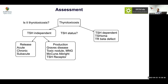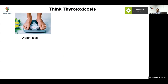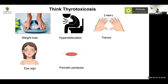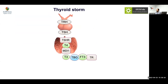The key questions are: is it thyrotoxicosis, what is the TSH status, and what is the cause? To identify thyrotoxicosis, you should be aware of when to consider it. Most of us know that if there is weight loss, hyperdification, tachycardia, tremor, or sympathetic activity, we start thinking of thyrotoxicosis. You should also be aware that periodic paralysis, polyuria, easy fatigability, worsening school performance, and myasthenia are all indications where thyrotoxicosis should be considered.